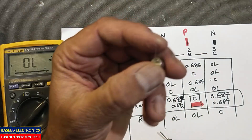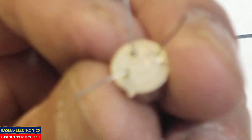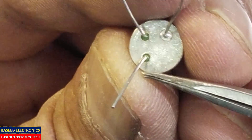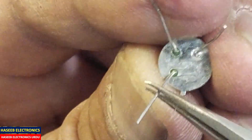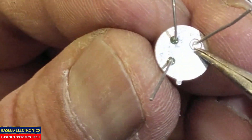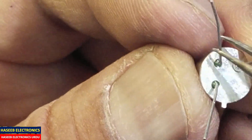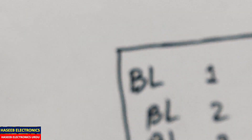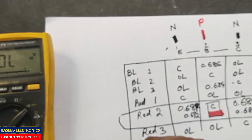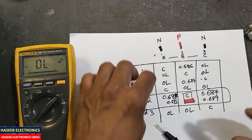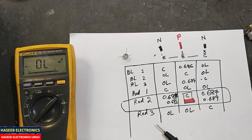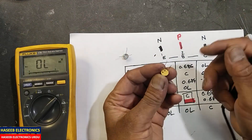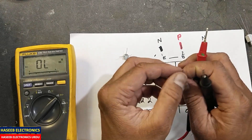Some 2N-series transistors have a marking on the body indicating the emitter pin, and the collector is connected to the body. Using the multimeter method, you can verify this. Now I will demonstrate with the same transistor that I found dead in a circuit.